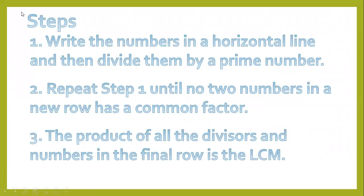So these are the steps. First, write the numbers in a horizontal line and then divide them by a prime number. Prime numbers are numbers that have two factors: one and itself. Second step, repeat step one until no two numbers in a new row have a common factor. Third, the product of all the divisors and numbers in the final row is the LCM.